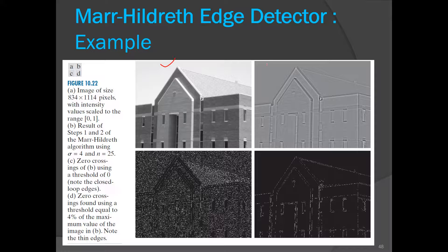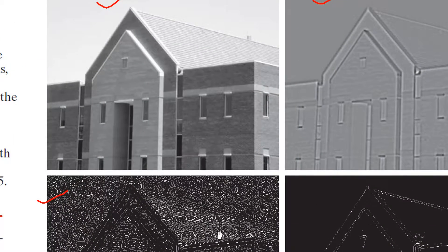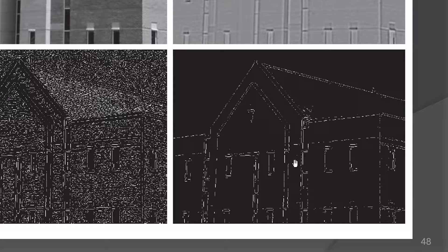Here is a result: the original image after applying the Gaussian followed by the Laplacian requires a thresholding operation. With a threshold of zero we get a very noisy result. Increasing the threshold to four percent of the maximum value — so if the maximum intensity is 100, the threshold is 96 — we get a cleaner edge image. There is some discontinuity along the edges, but we can apply algorithms to join the edges.